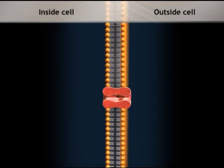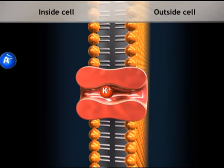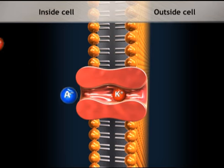This channel allows potassium ions to diffuse down the steep concentration gradient. The corresponding anion does not fit through the potassium channel and is left behind.